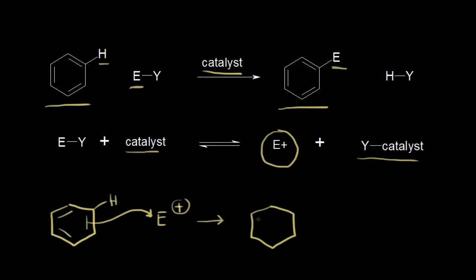The pi electrons form a covalent bond with the electrophile. The electrophile can add to either carbon of the double bond; here I'll show it adding to the top carbon. Highlighting the pi electrons forming that bond — these are the ones functioning as a nucleophile. In forming that bond, we take a bond away from the bottom carbon, so that bottom carbon is left with a +1 formal charge.